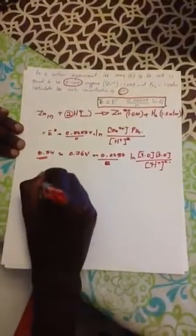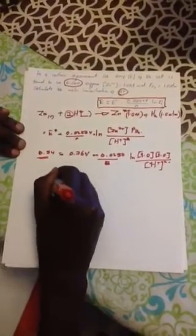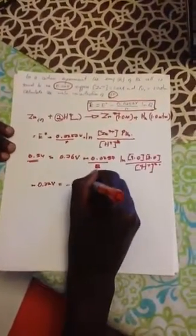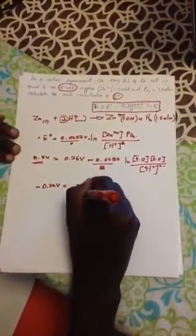So, you move to the other side, you get negative 0.22 volts, which equals to negative 0.0257 volts, divided by 2.